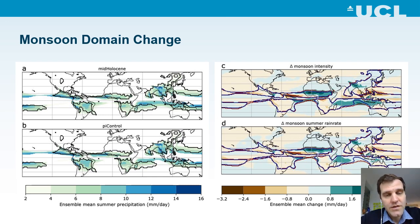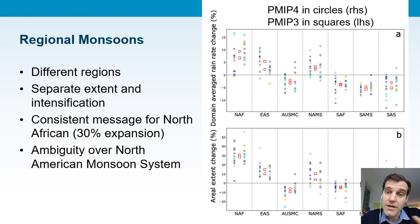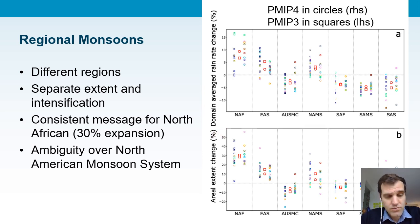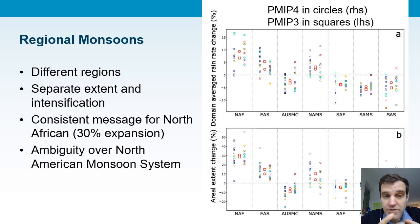This plot shows that same information but with values for each of the different models. For North Africa, nearly all of the models in the new ensemble show an increased rainfall rate of about 10% and an expansion of the monsoon area of about 30%. This is somewhat similar to the previous generation shown in squares. There's some consistency on the East Asian monsoon, but for other monsoons the models don't necessarily agree, especially over North America where models can be of either sign.